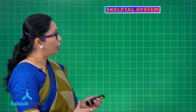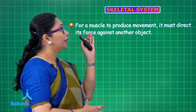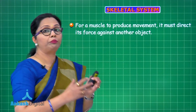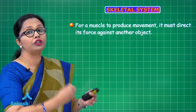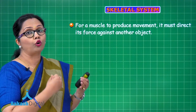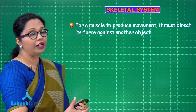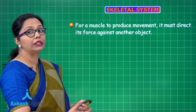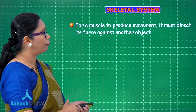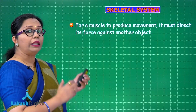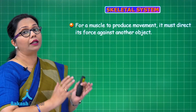The first question that arises is: what is the need for the skeletal system? The first need is that the muscles, when they produce movement, require a rigid support against which they can contract. That is why a skeletal system is required, to which the muscles can attach and develop the force of contraction.